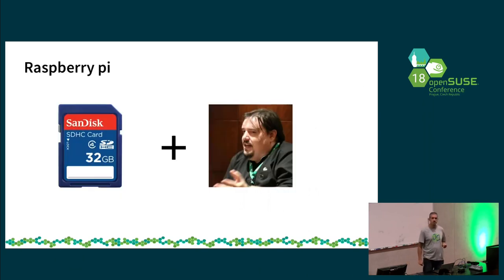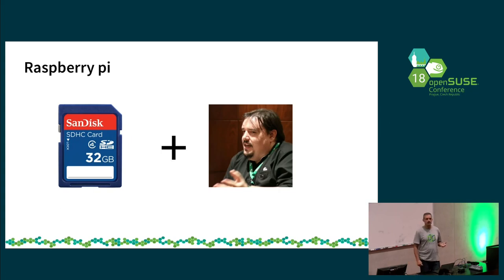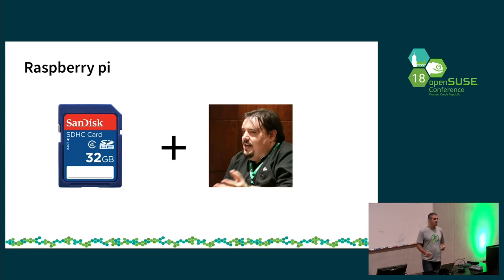There is one last option, which is Raspberry Pi. For that you need a 64-bit Raspberry Pi, an SD card, and you need to ask nicely to Richard Brown, because he's the one who's been building that image. He will be able to tell you if it works and if you should be using it. You should let him know you're going to use it because he will be very happy — we'd like to have Cubic being used on a regular basis on more and more devices.